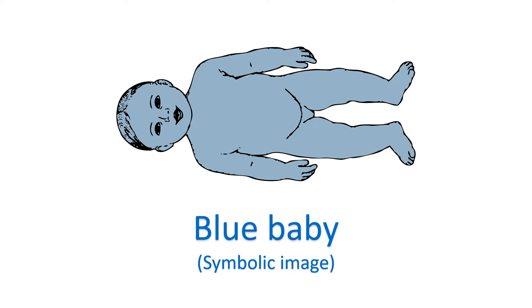TAPVC is a birth defect of the heart with cyanosis. Part of the blood returning from the lungs can get recirculated to the lungs, increasing the pulmonary blood flow. Increased pulmonary blood flow can increase the blood pressure in the lungs in the long run.